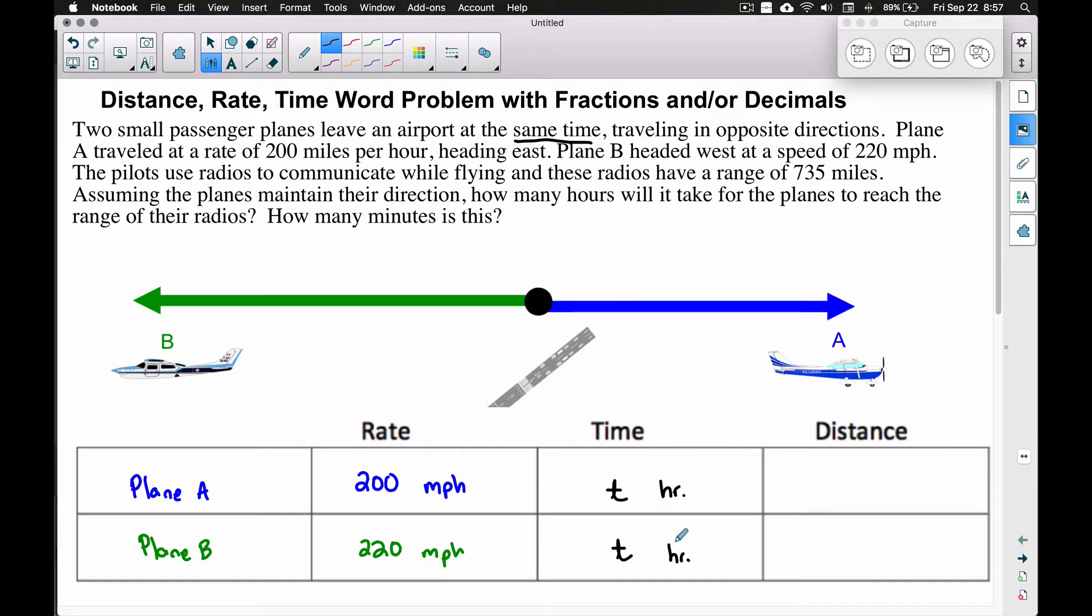Now, the distance: This is where I see a lot of students make mistakes. They'll put 735 in both of these spots because they see the 735 miles. That's not really what we're doing here. I'm going to put two dots here and consider this a little line going in between these two dots. This right here is going to be the range of their radios. That entire line is going to be 735 miles.